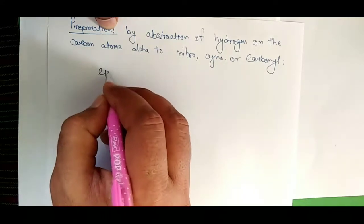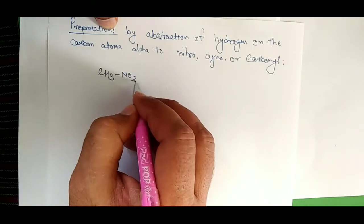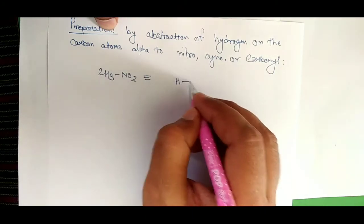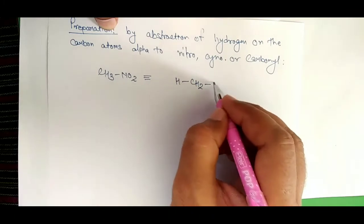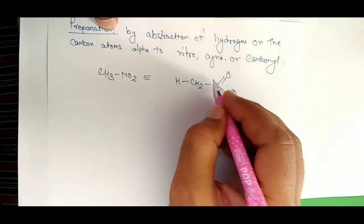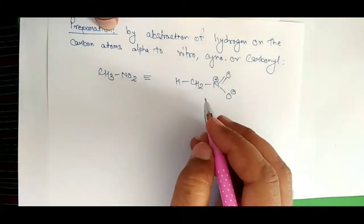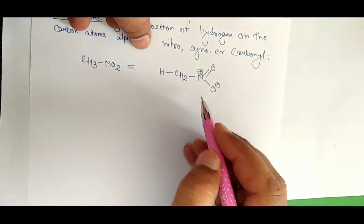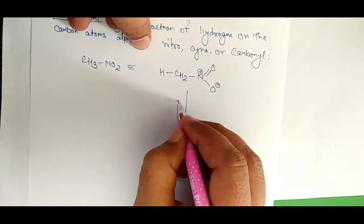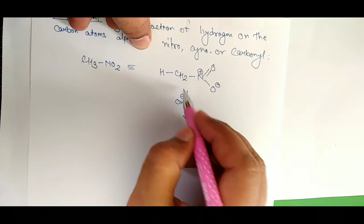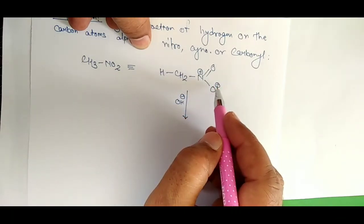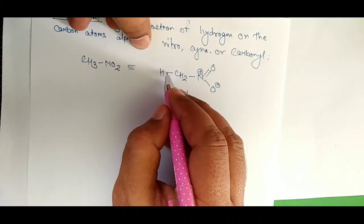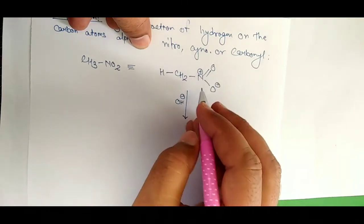Let us start with nitromethane. If we have CH3NO2, this is nitromethane. It can be written as HCH2 with N double bond O and O negative, and this carbon carries a positive charge. If we add a base here, the base will abstract this proton because the electron-withdrawing group NO2 withdraws electron density toward itself.